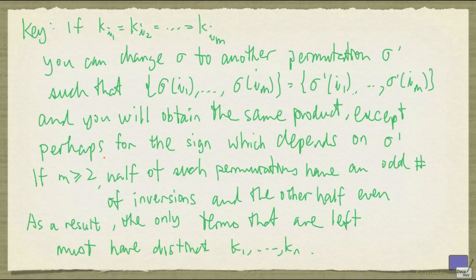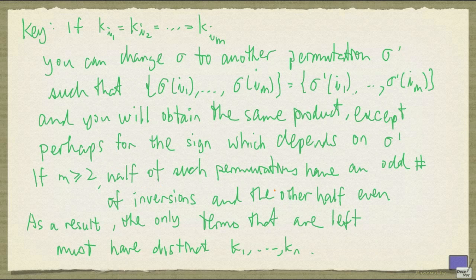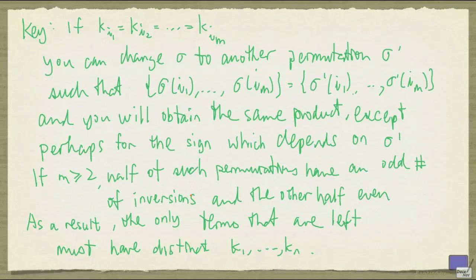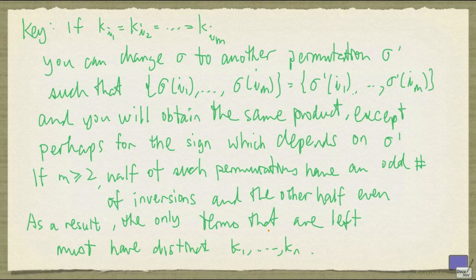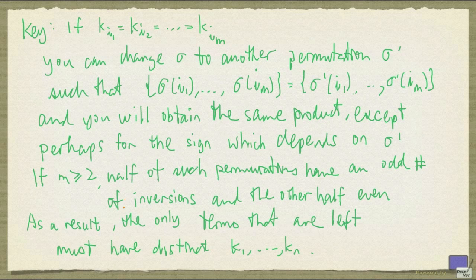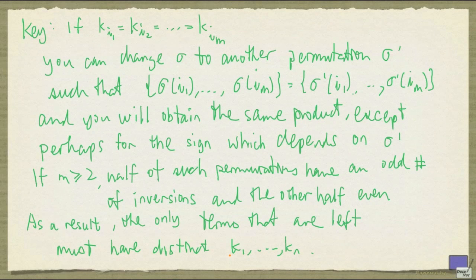If m is at least 2, half of these permutations will have an odd number of inversions and the other half an even number. As a result, the only terms that are left after simplification is when all these indices k1 up to kn are distinct. And the possible values for these indices are 1 up to n. So if n distinct values and each of them is 1 up to n, then they must form a permutation of 1 up to n.